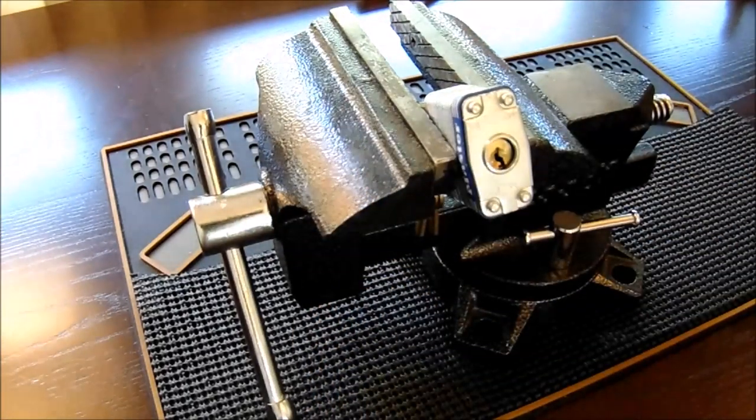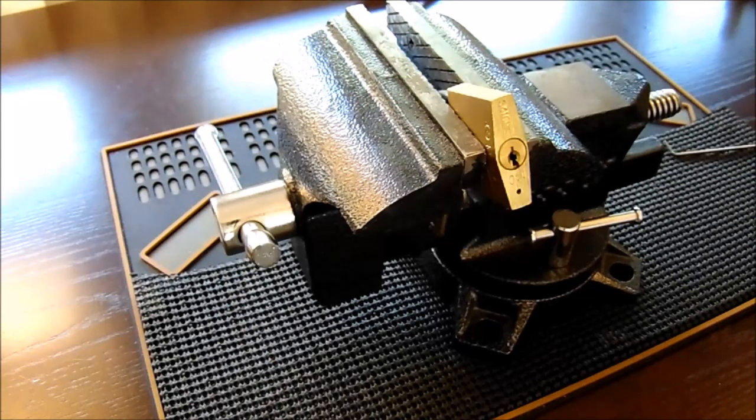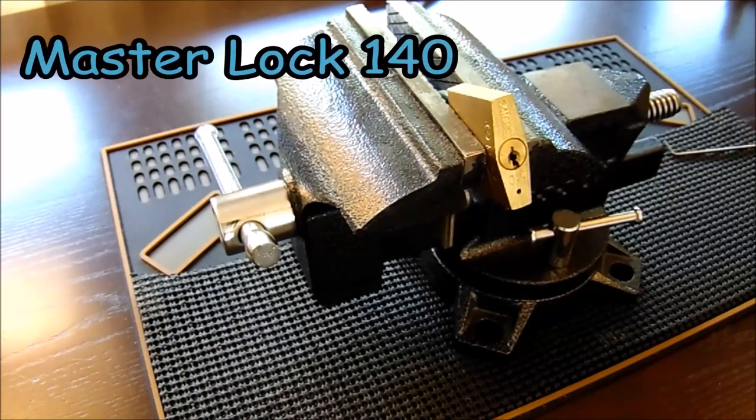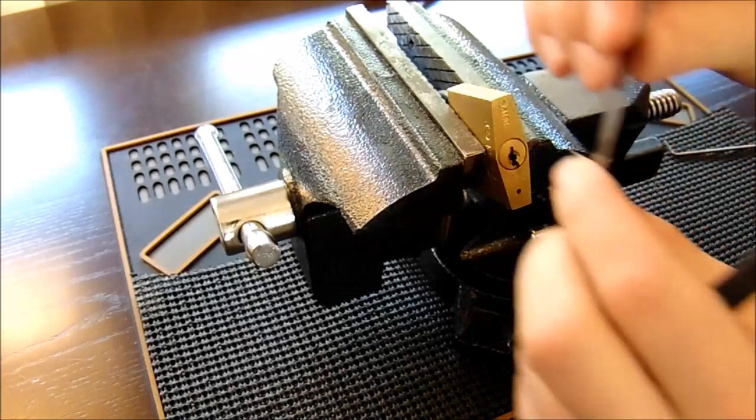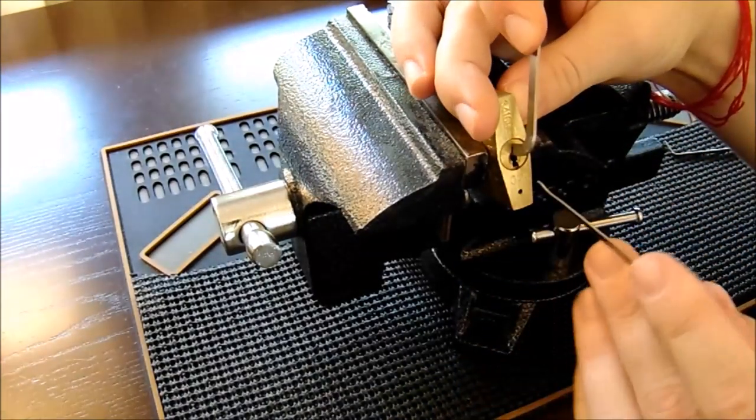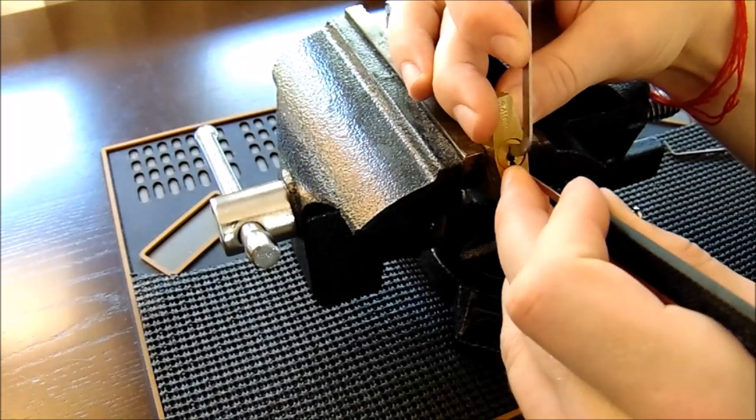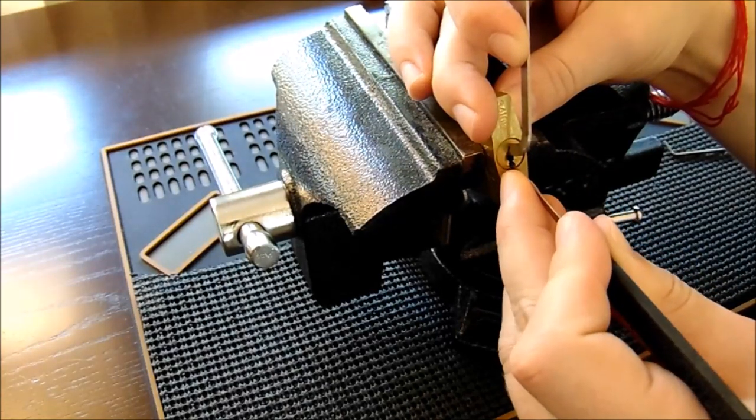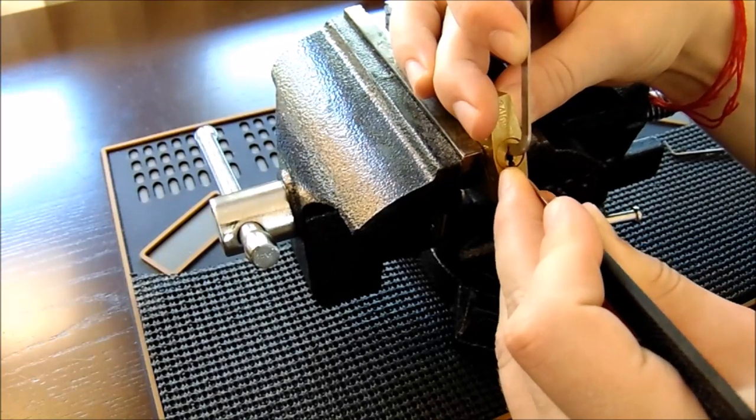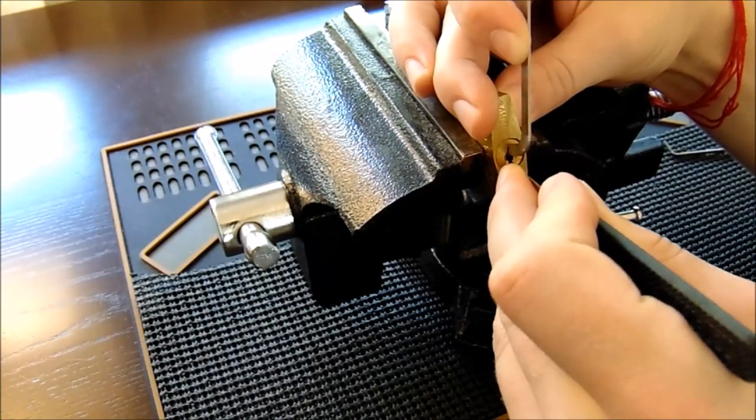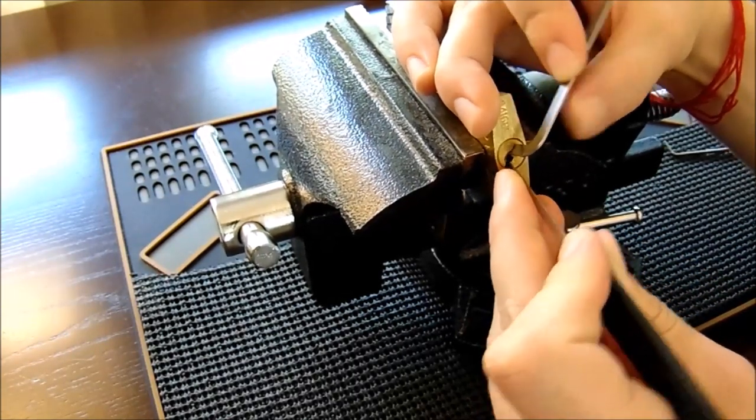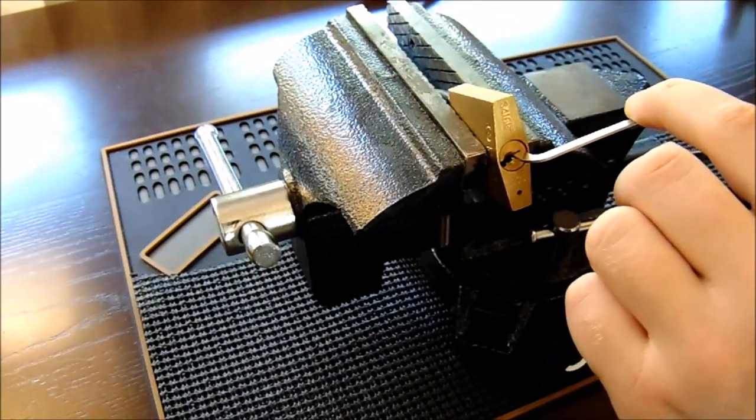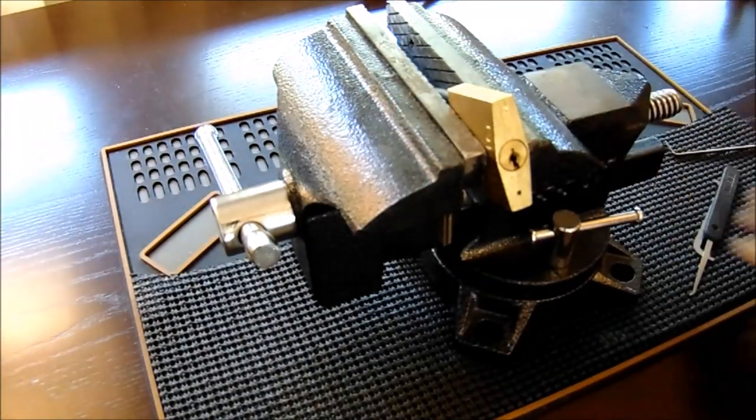Okay, we got the master lock number 140 up in the vise. It's the third lock on my progressive lock list. This lock does contain one spool. What I'm going to do is use top of the keyway tension in 40 thousandths and a standard hook in 25 thousandths. You can get this lock with a bottom of the keyway tensioner as well. But I just like top of the keyway better. One, two, a little false set. Three. Let's see. Four. Okay, pin one is what was holding us up. Now this is a great little four pin lock for those starting out.